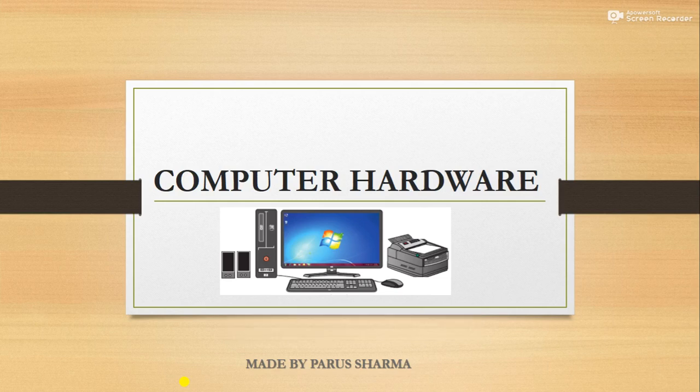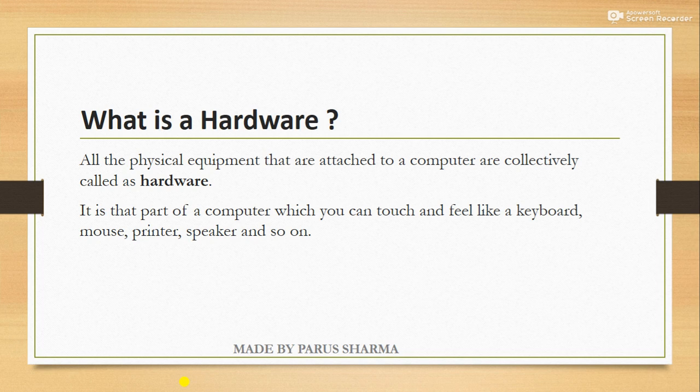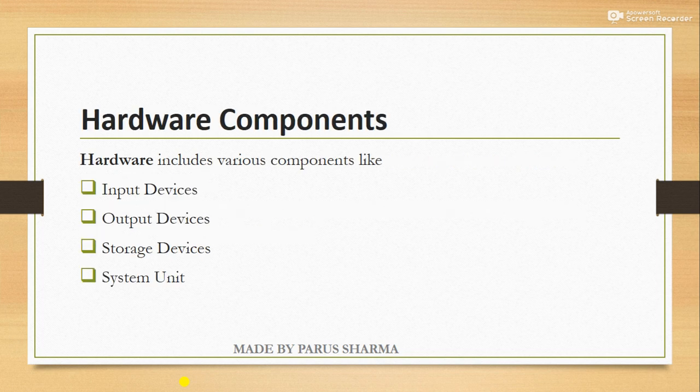Hello and welcome to your YouTube channel. Today we will learn about computer hardware and its components. Computer hardware is a physical equipment or physical device that is attached to a computer, collectively called hardware. You can feel and touch it, like keyboard, mouse, printer, speaker, and so on.